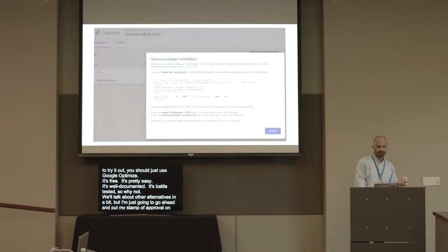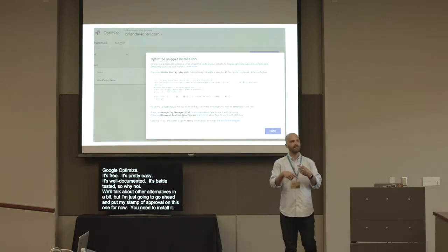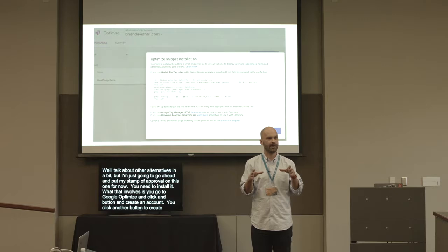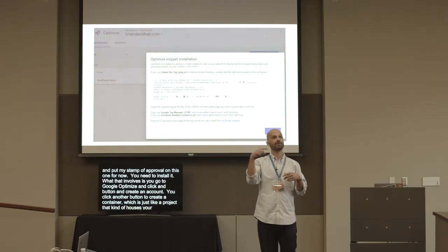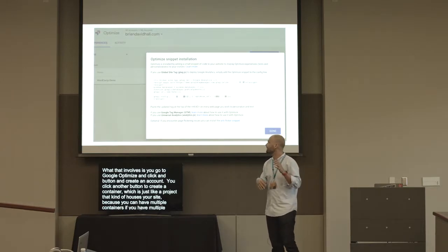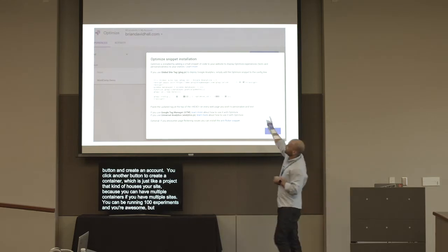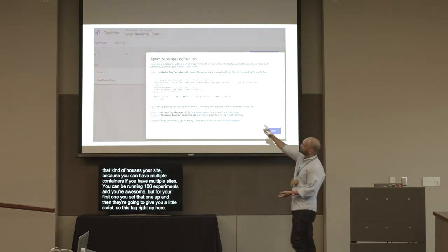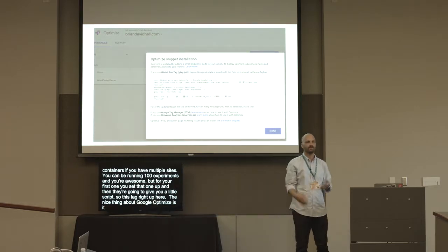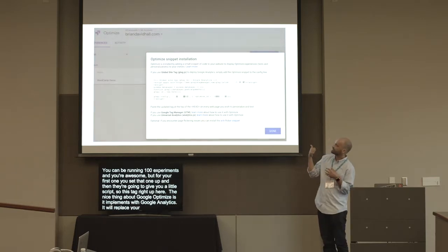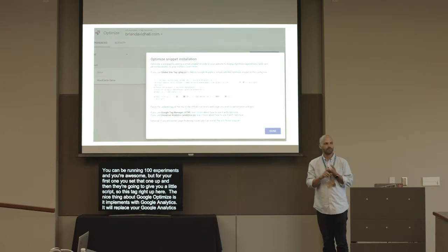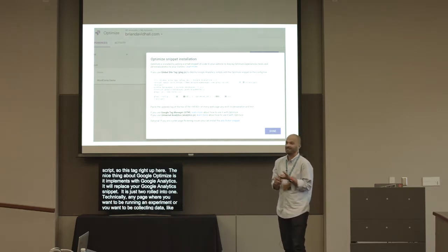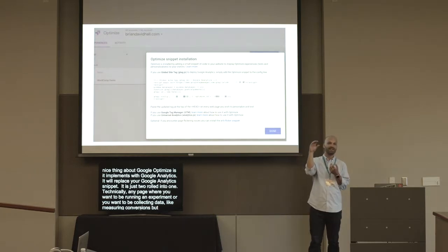You need to install it. You go to Google Optimize, click a button, create an account. Then click another button to create a container — which is just a project that houses your site. They give you a little script, this tag right here. One nice thing about Google Optimize is it integrates with Google Analytics, so this snippet will actually replace your Google Analytics snippet — it's both rolled into one. Put this onto your website, ideally at the very top of the head tag of every page on your site.